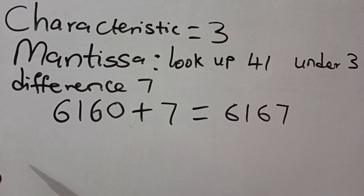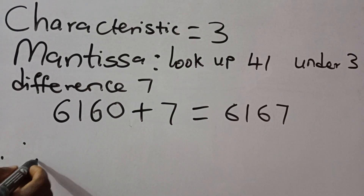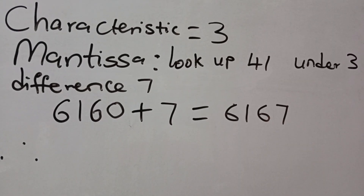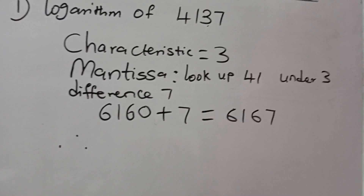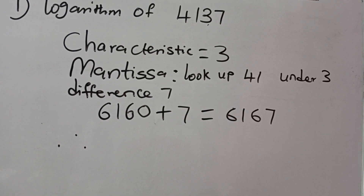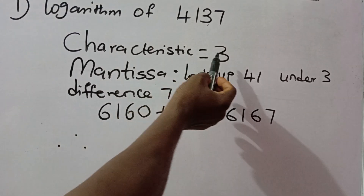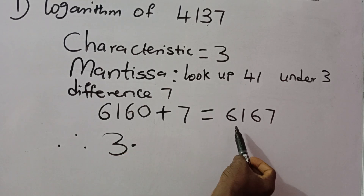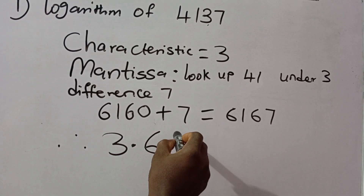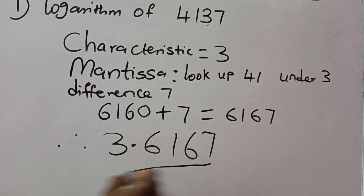Remember that logarithm is made up of two parts — the characteristic and the mantissa. When we combine them, the logarithm of 4,137 is written as the characteristic first: 3, then the mantissa: 6167. So log(4137) = 3.6167.